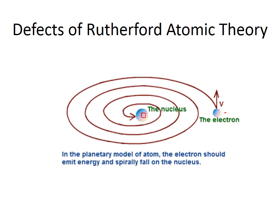Electrons are negatively charged particles. Before him, there was a plum pudding model, and according to the plum pudding model, the positively charged particles are uniformly distributed throughout an atom and the negatively charged particles are embedded in it. That was the wrong concept given by J.J. Thomson, who was the teacher of Rutherford. Then in 1911, Rutherford told about the exact position of the nucleus by the gold foil experiment.